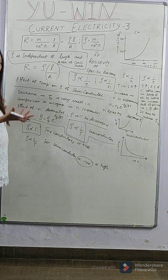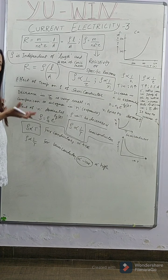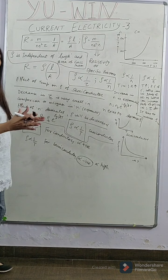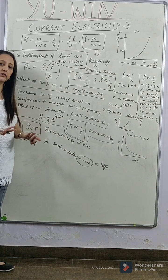Number density is number of free electrons per unit volume. When free electrons per unit volume increase, then conductivity will increase.